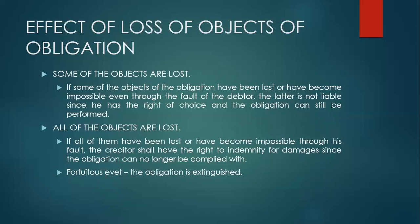Effects of loss of objects of obligation. As stated earlier, in alternative obligations there are several prestations — two or more. So what if some of the objects of the obligation are lost or all of the objects of the obligation are lost? If some of the objects are lost or have become impossible, even through the fault of the debtor, the debtor is not liable since he has the right of choice and the obligation can still be performed.